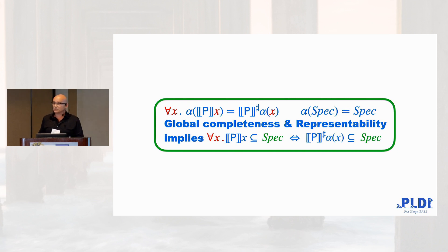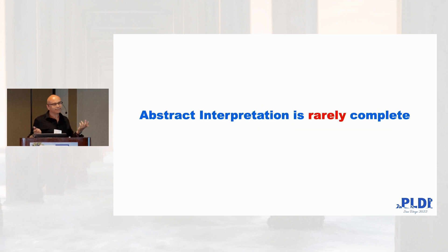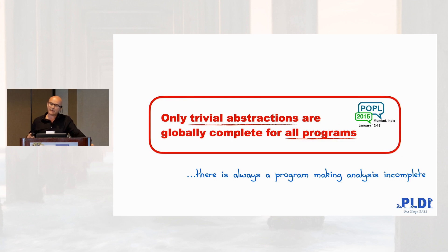That's great. The best situation would be, let's have complete domains. Unfortunately, abstract interpretation is rarely complete. Basically, it's almost never complete. If you have an abstract domain that can see something but cannot see everything, so it loses precision at some point, you can always build a program that foils your abstract interpreter and produces false alarms. Always.